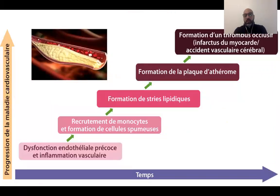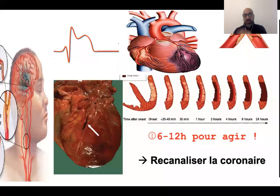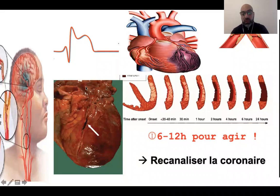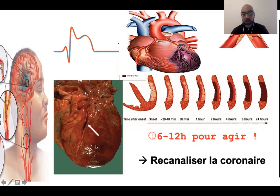Cette maladie athéromateuse va toucher les vaisseaux du cœur, les vaisseaux du cerveau et les vaisseaux de tous les organes, notamment des membres inférieurs et des tissus rénaux. La gravité au niveau du cœur et du cerveau tient au fait qu'on a une vascularisation terminale : dès que ce vaisseau se bouche, on a très peu de temps pour agir, et les dégâts seront considérables. Voici un thrombus au niveau d'une coronaire chez un jeune patient tabagique décédé brutalement suite à l'occlusion brutale d'une artère coronaire.